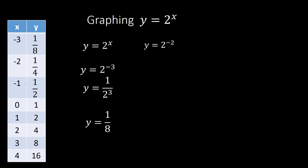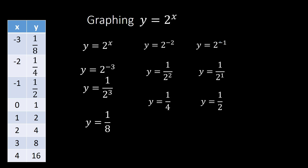If x is negative 2, you plug in negative 2, giving 1 over 2 squared, which is 1 fourth. With negative 1 as the exponent, we have 2 to the negative 1st power, or 1 over 2. If the exponent is 0, y equals 2 to the 0 power, which gives 1. Then if x is 1, we have 2 to the 1st power, which is 2. Putting in 2 gives 2 squared, which is 4. Plugging in 3 gives 2 to the 3rd power, which is 8. And 2 to the 4th power gives 16.